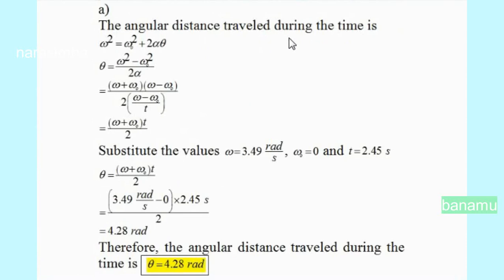The angular distance travelled during the time uses the kinematic equation: omega² = omega-0² + 2·alpha·theta. The angular distance theta equals (omega² minus omega-0²) divided by 2·alpha. Writing omega² minus omega-0² as (omega + omega-0)(omega minus omega-0) and substituting alpha equals (omega minus omega-0)/t, the angular distance simplifies to theta = (omega + omega-0)·t / 2.